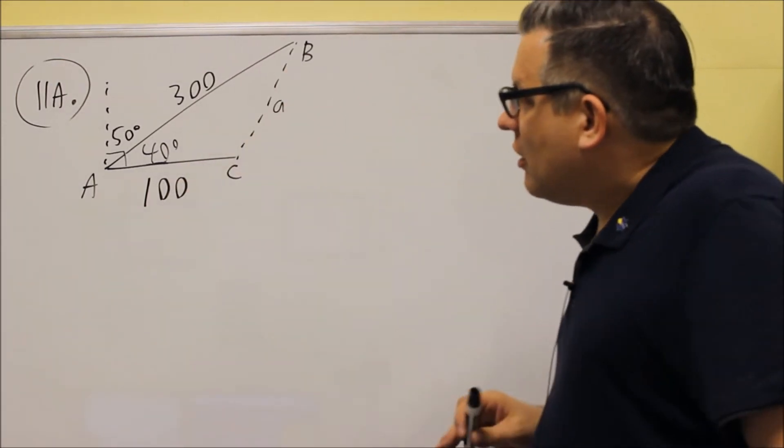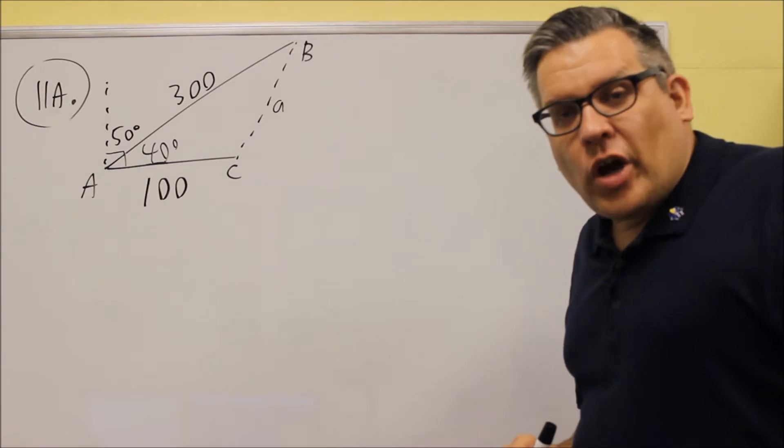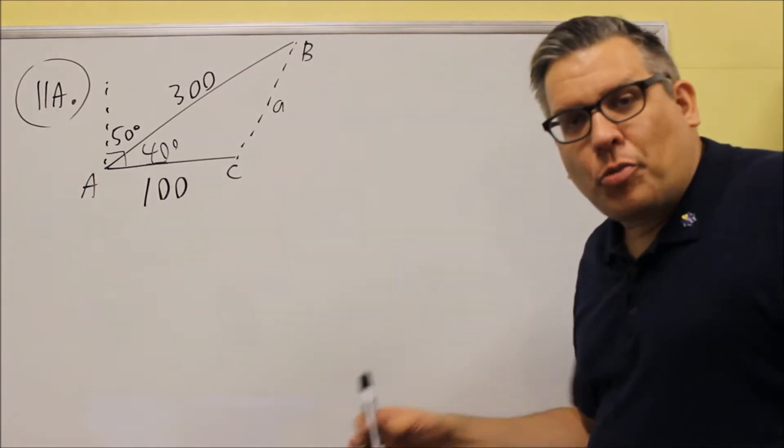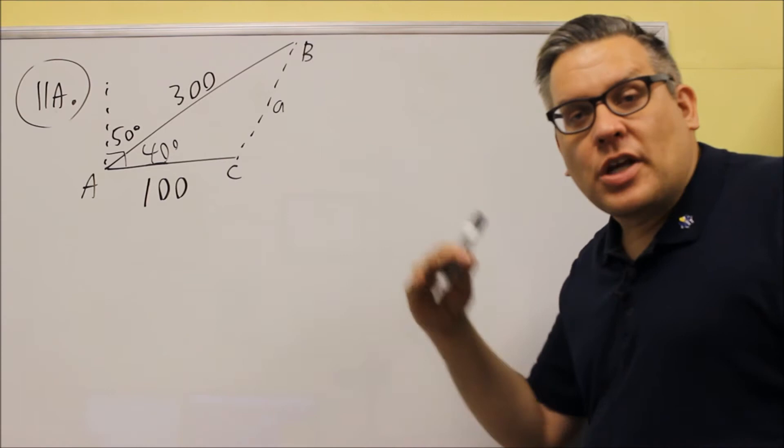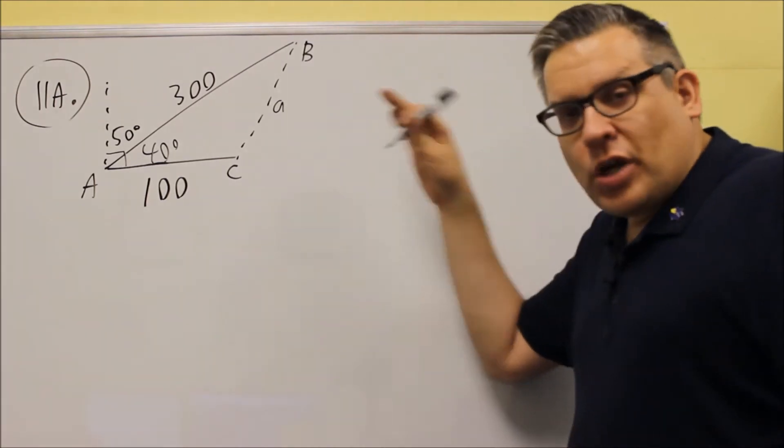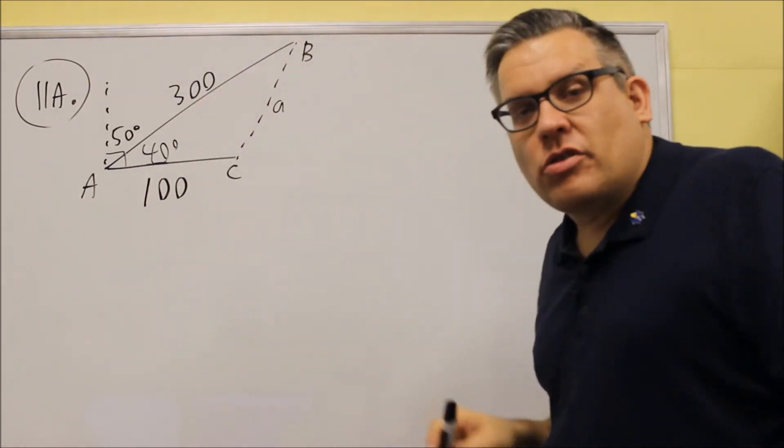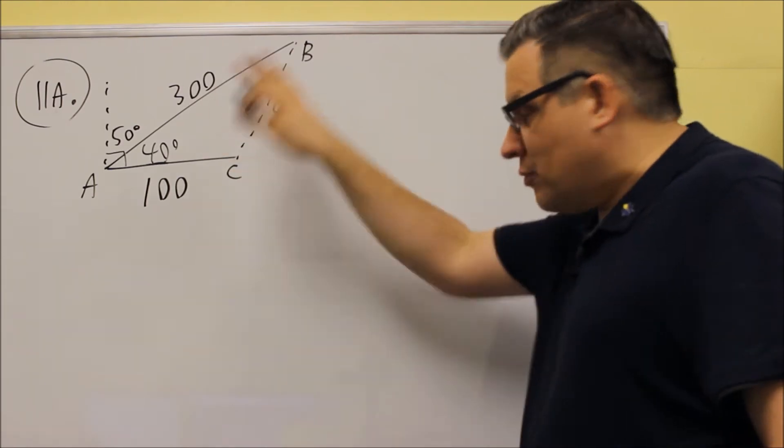So now that we have everything set, now we have to choose the correct law of cosines formula. There's three different versions of that. One starts with A squared, B squared, or C squared. And you want to pick the one that relates to the letters that you have in the problem itself, how the triangle is labeled.